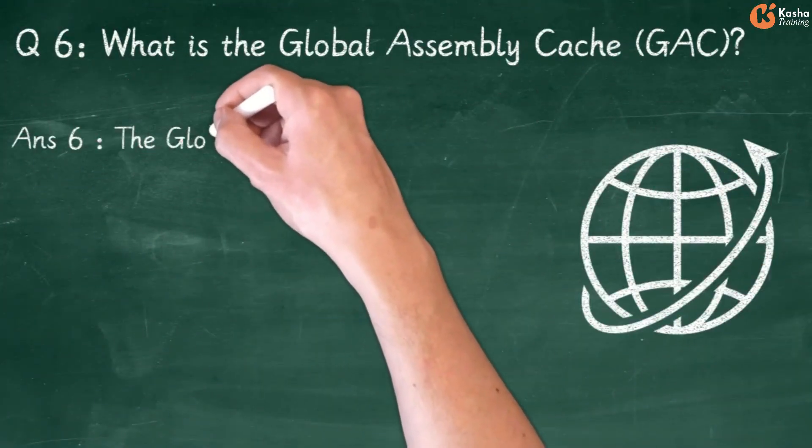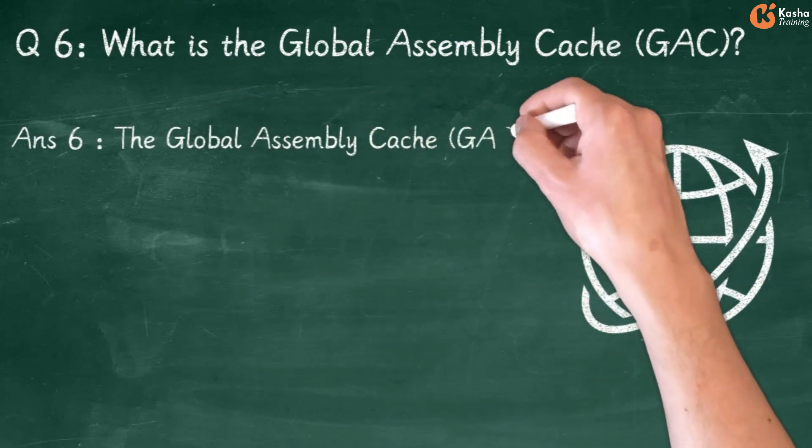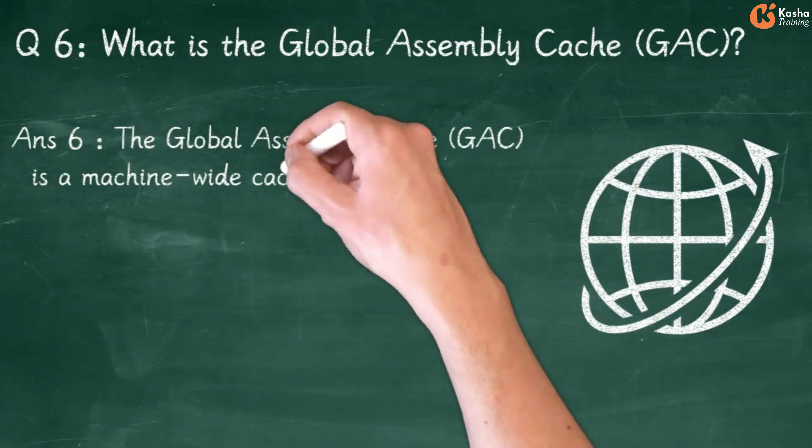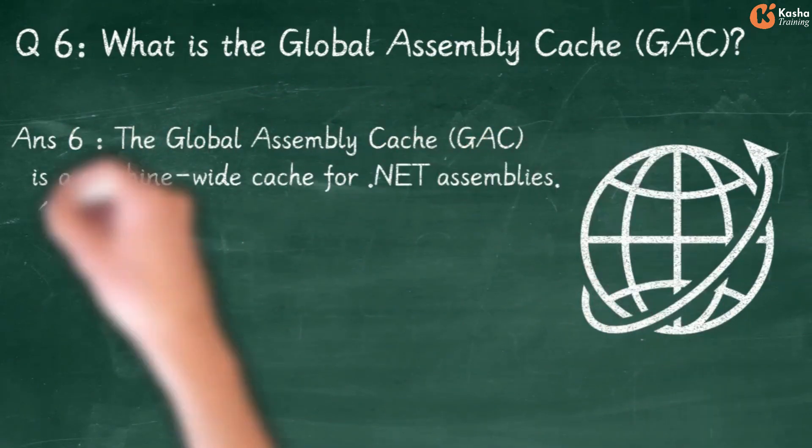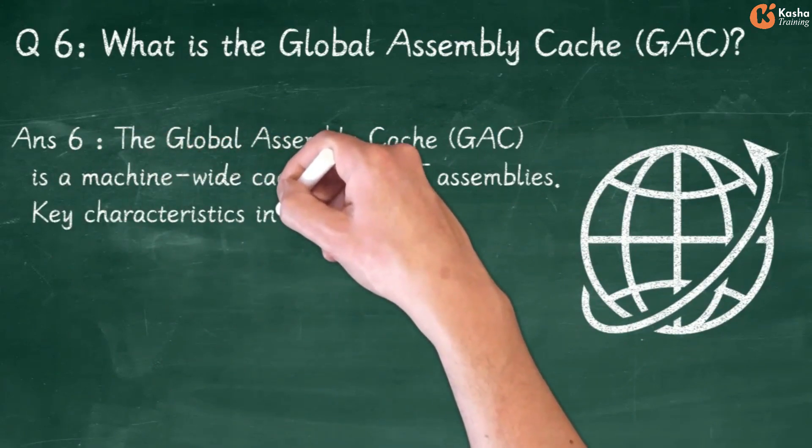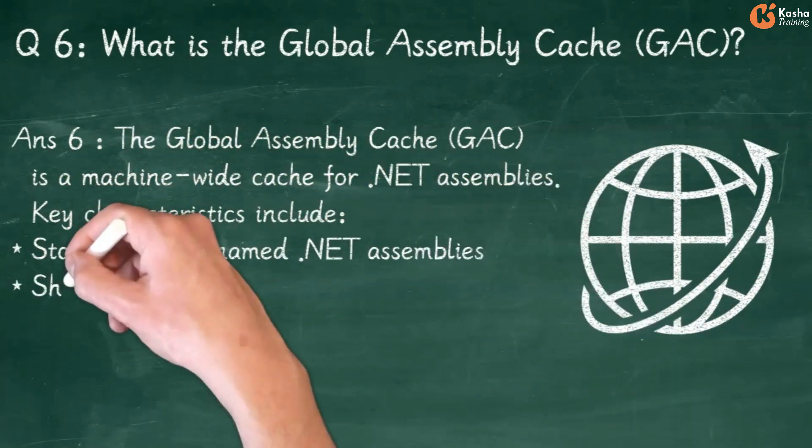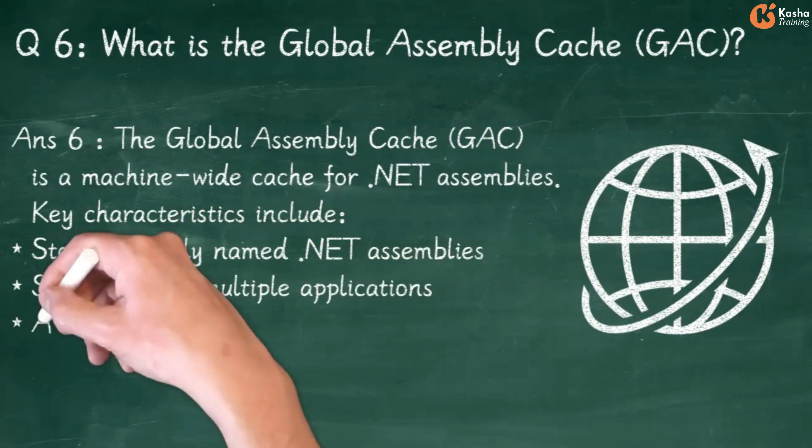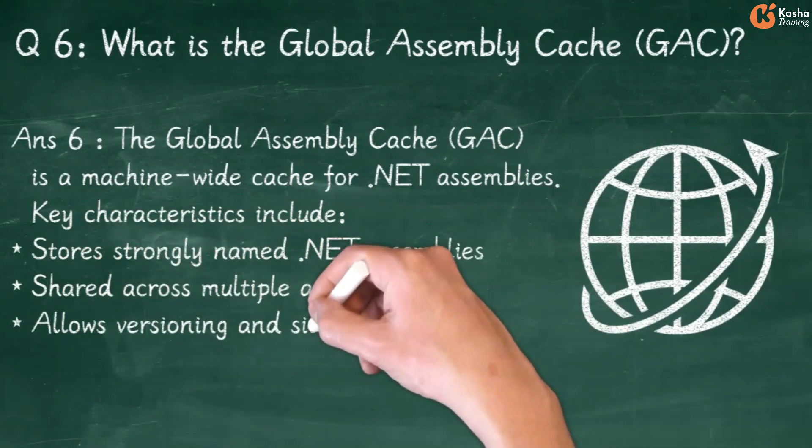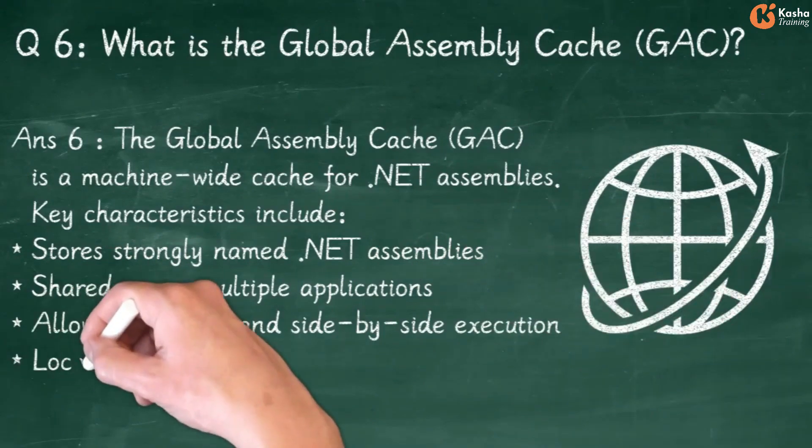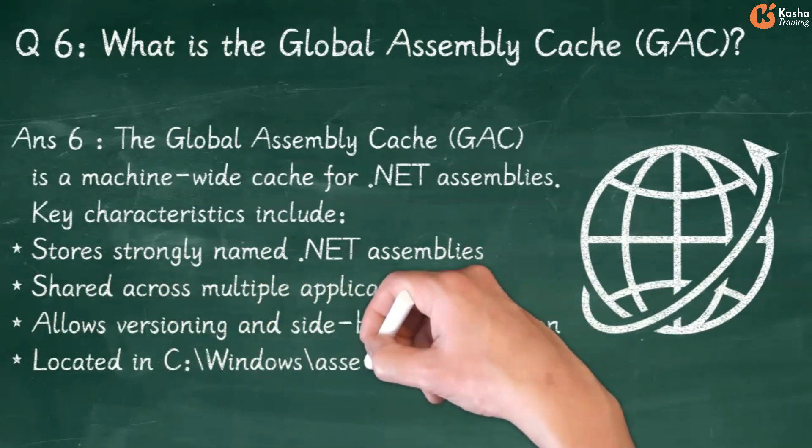Answer 6: The Global Assembly Cache (GAC) is a machine-wide cache for .NET Assemblies. Key Characteristics include: Store Strongly Named .NET Assemblies, Shared Across Multiple Applications, Allows Versioning and Side-by-Side Execution, Located in C:\windows\assembly.